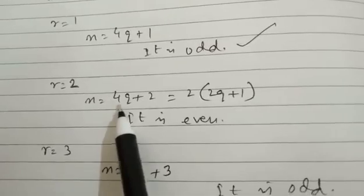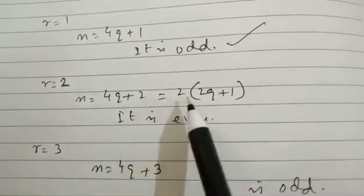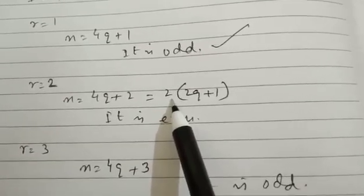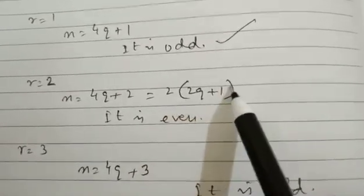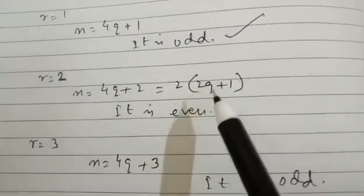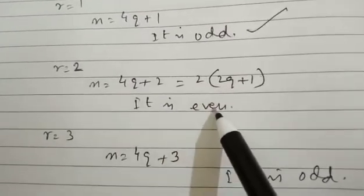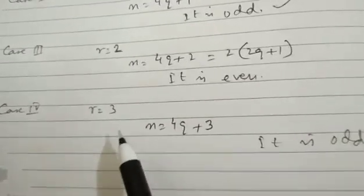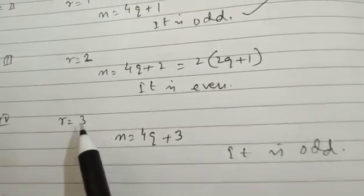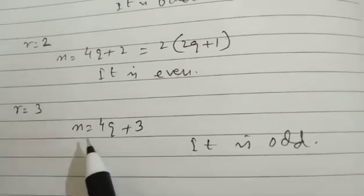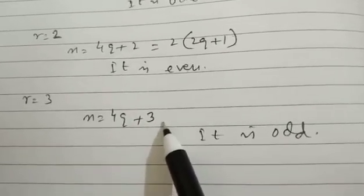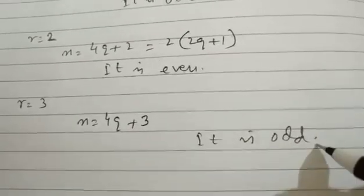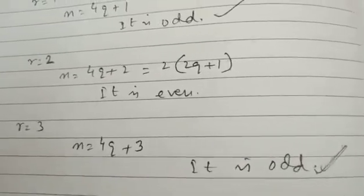For case number 3, when R is taken as 2, then N is equal to 4q plus 2, which we can express as 2 into bracket 2q plus 1 — a multiple of 2 — and that means it becomes an even number. Then we come to case number 4, when the remainder is 3. We can express N as 4q plus 3. In this case we are not getting 2 as a common factor, so it comes in the category of odd.